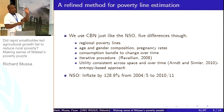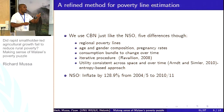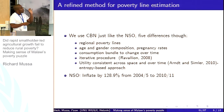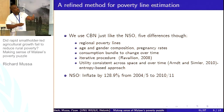We also allow for the fact that the consumption boundary will change over time, and we follow Ravallion (2009) by including an iteration procedure — something not done in the official analysis. A key part of what we're doing is ensuring that the poverty lines are consistent over time and across space, which again the official analysis does not address.